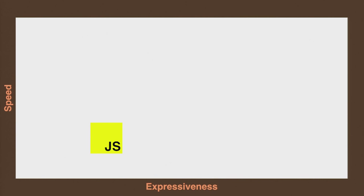You often see this when a new programming language comes out. When Swift came out, they actually made one of these diagrams and said, look at Swift, it's so important, it's like outside of the normal curve. But the basic idea behind these curves is that every programming language has a fixed position on these curves, and as you add more expressiveness to a language, by definition the speed has to be decreased.